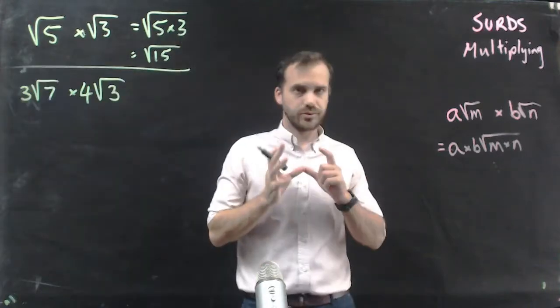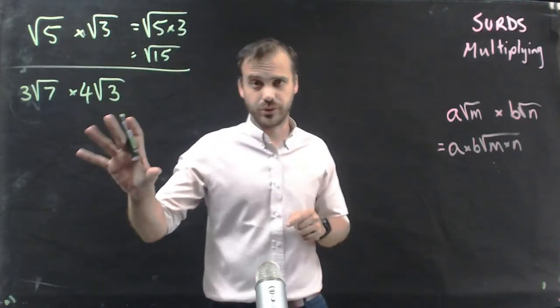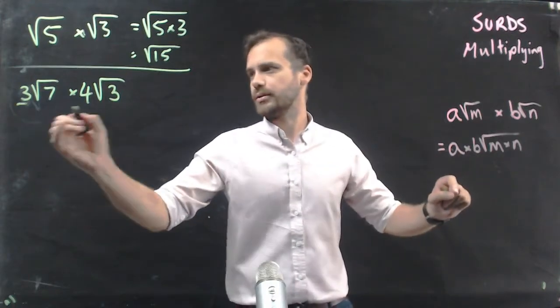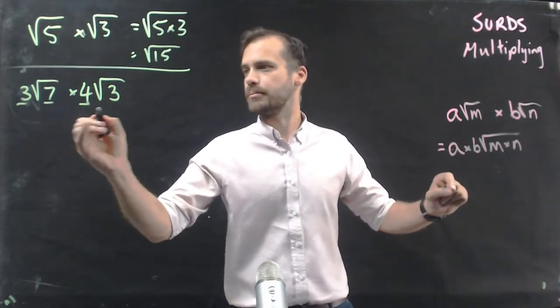Second example. 3 root 7 times 4 root 3. Now this is exactly like our general form. A, b, m, n.